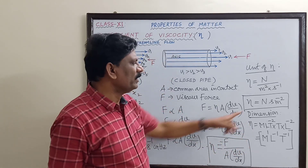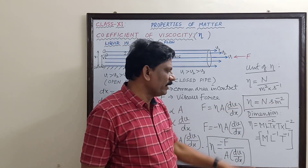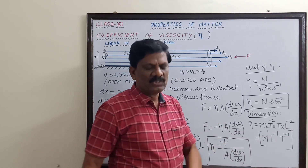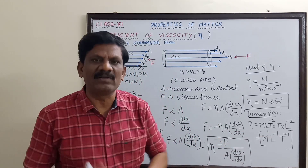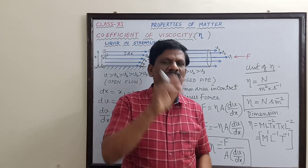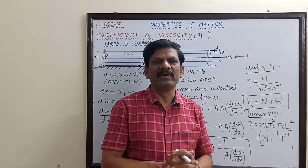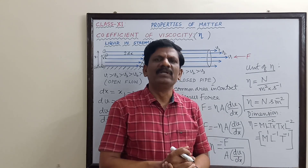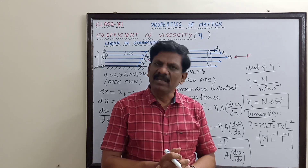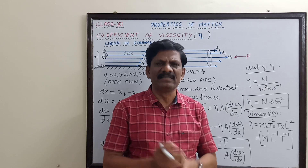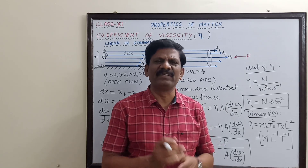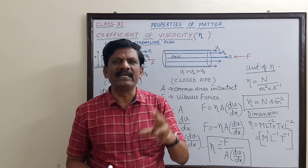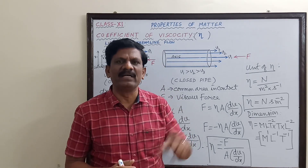The unit is newton·second per meter squared and the dimension is M·L⁻¹·T⁻¹. Viscosity is the property of the liquid which opposes the relative motion between different layers of the liquid — in short, it is liquid friction.